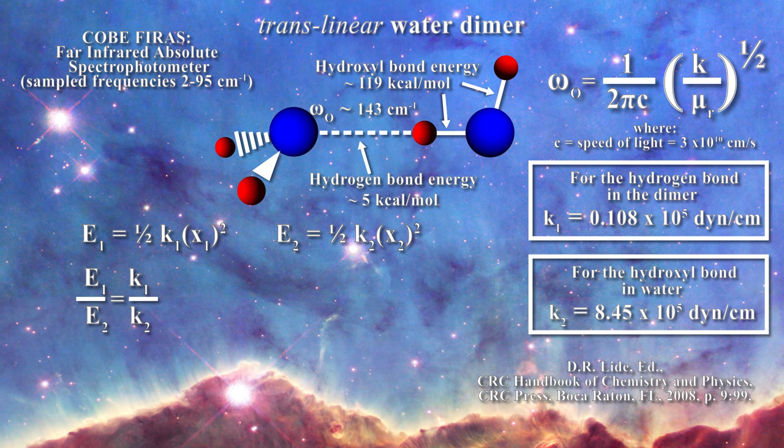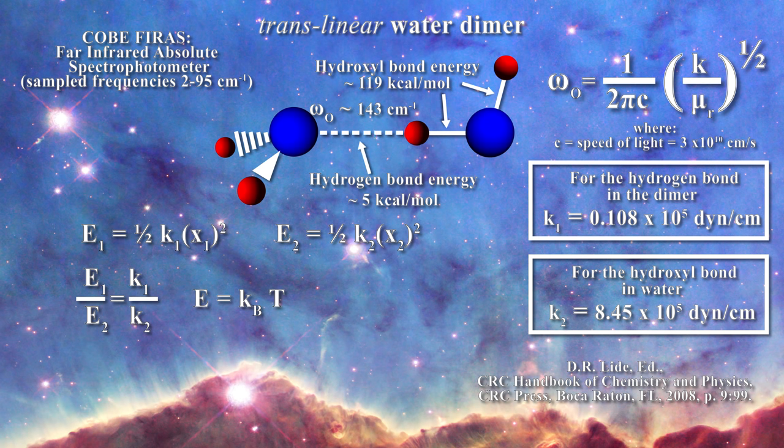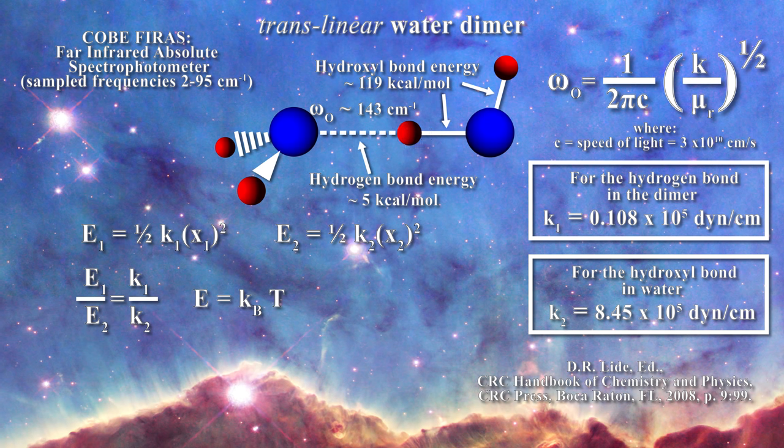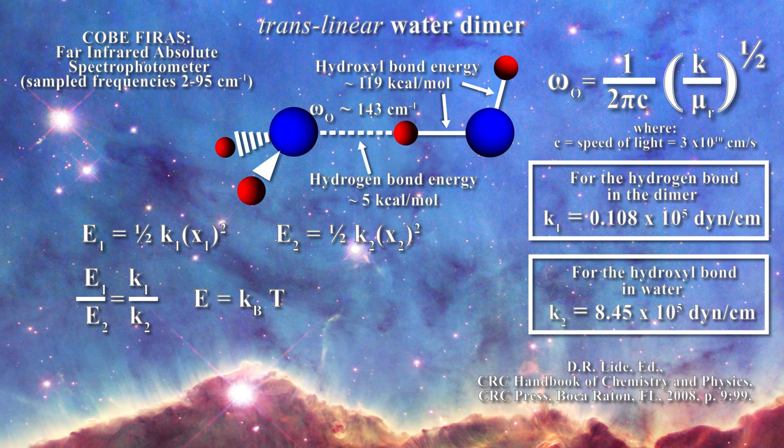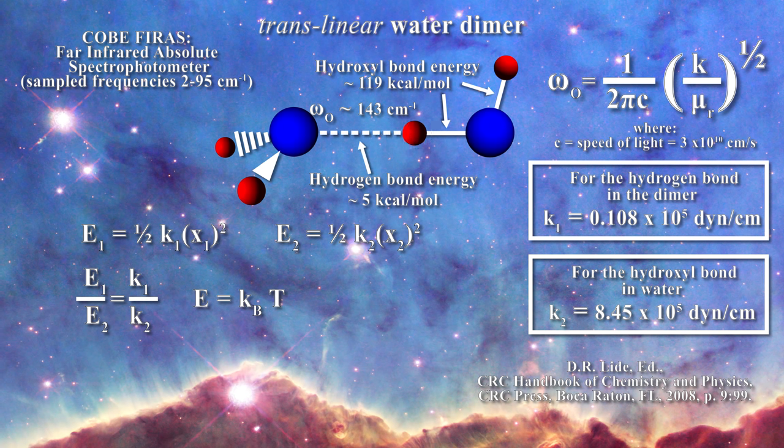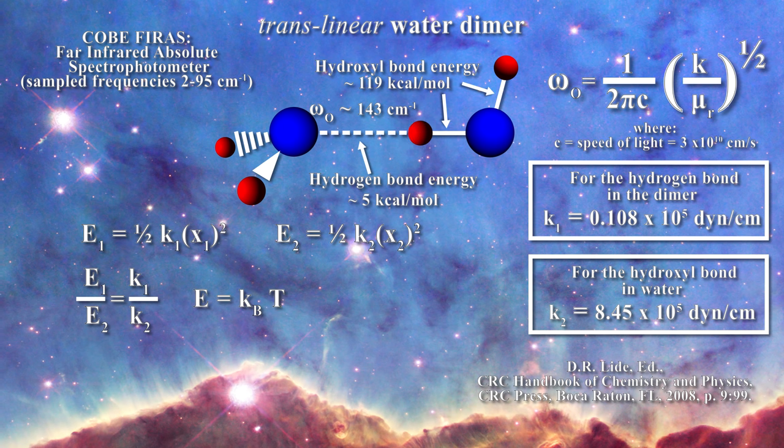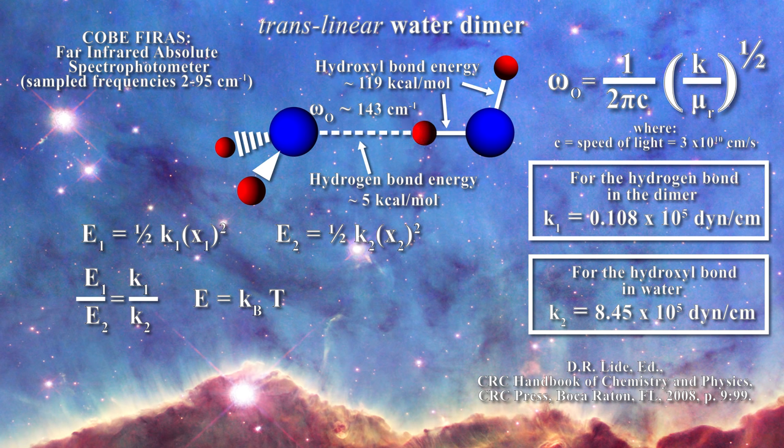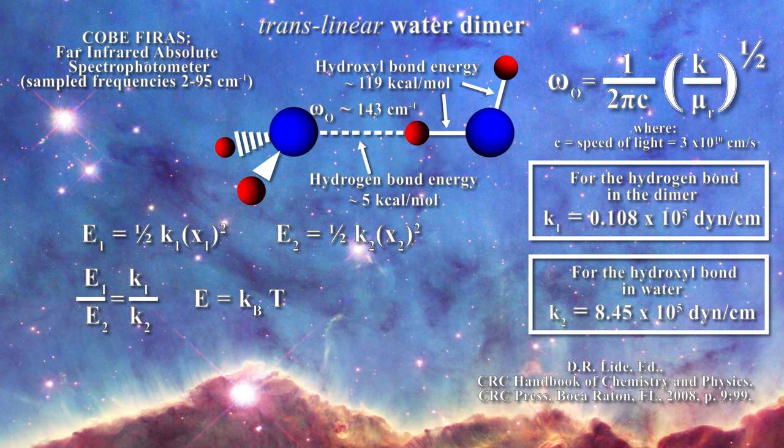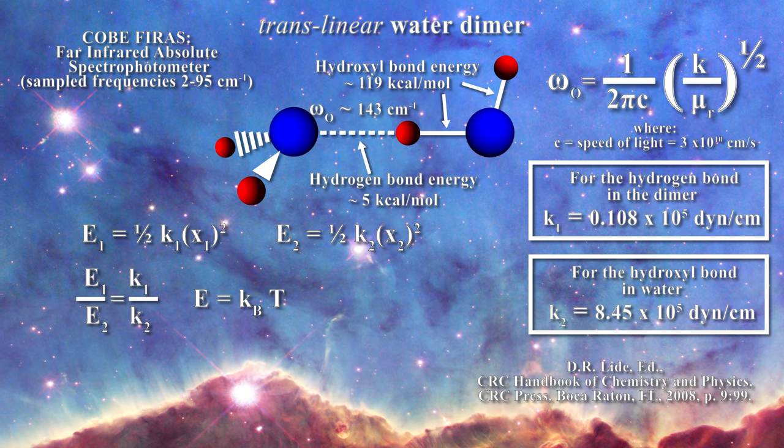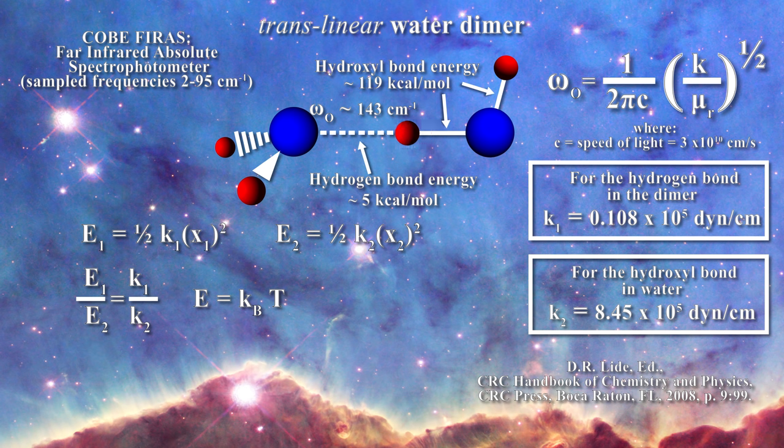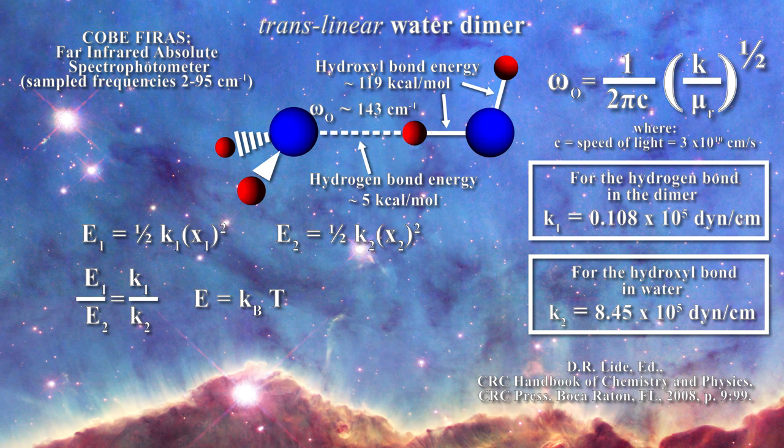Now we can then use this simple equation which relates the energy to temperature. In this case E represents the energy, k sub b is Boltzmann's constant and T is the temperature in Kelvin. As a result, since the hydroxyl bond has a force constant which is 80 times stronger, the energy that the system can hold corresponds to temperature which is 80 fold greater. Next we can refine this a little.